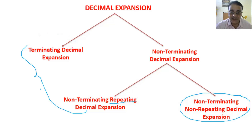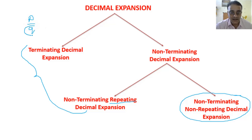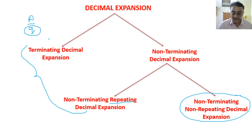Rational numbers have certain conditions. By using that condition you can identify whether a number has a terminating or non-terminating repeating decimal expansion. Suppose p/q is a rational number — we can factorize the denominator and use one condition to check whether it is terminating or non-terminating repeating. We are going to see that in the next slide.